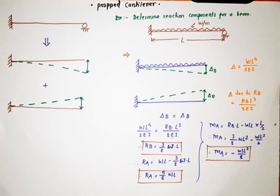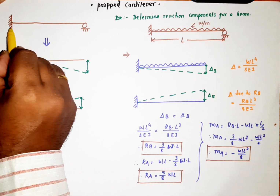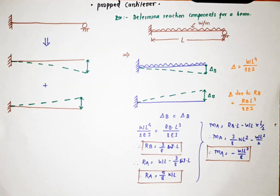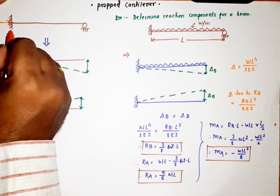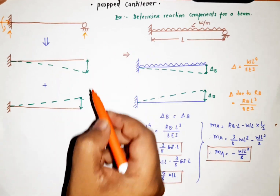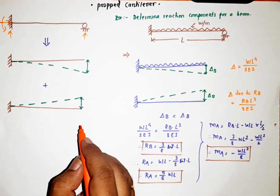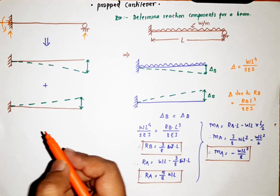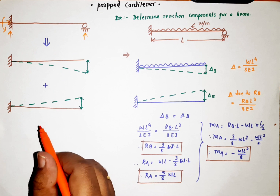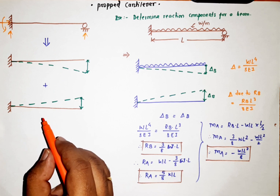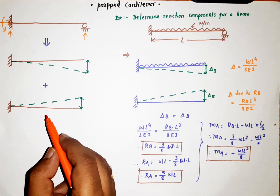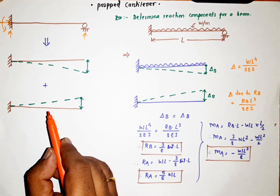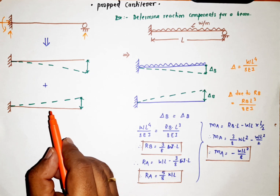Welcome to Excel Engineering Education. In this video we will discuss about the propped cantilever. A propped cantilever is a cantilever with a roller support at its end, giving four unknowns and four reactions. This makes it a statically indeterminate beam, which cannot be solved using the three equilibrium equations — summation of Fx = 0, Fy = 0, and moment = 0 — since there is a fourth unknown.